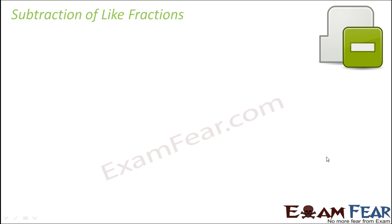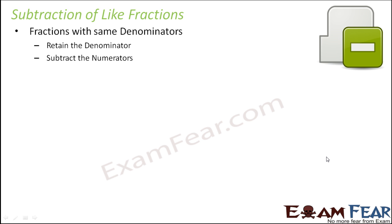Now what about subtraction of like fractions? That is also going to be on the same lines. So in this case also you retain the denominator but this time you subtract the numerators. So let us take example 3/5 minus 1/5. So you retain the denominator and you subtract the numerator. So this would be 2/5.